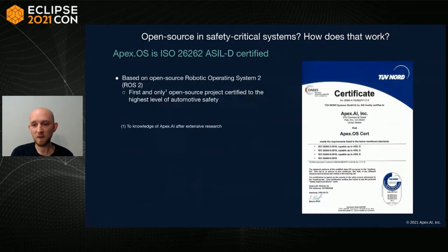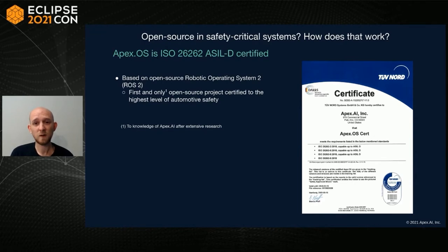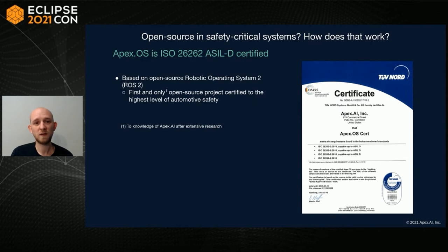In March this year we received a certificate from TÜV Nord: Apex OS based on ROS 2 is ISO 26262 ASIL D certified. To our knowledge this is the first and only open source project certified to the highest level of automotive safety. But when developing Eclipse iceoryx we asked ourselves: does it always have to be like this? Can we not develop safety software in the open?